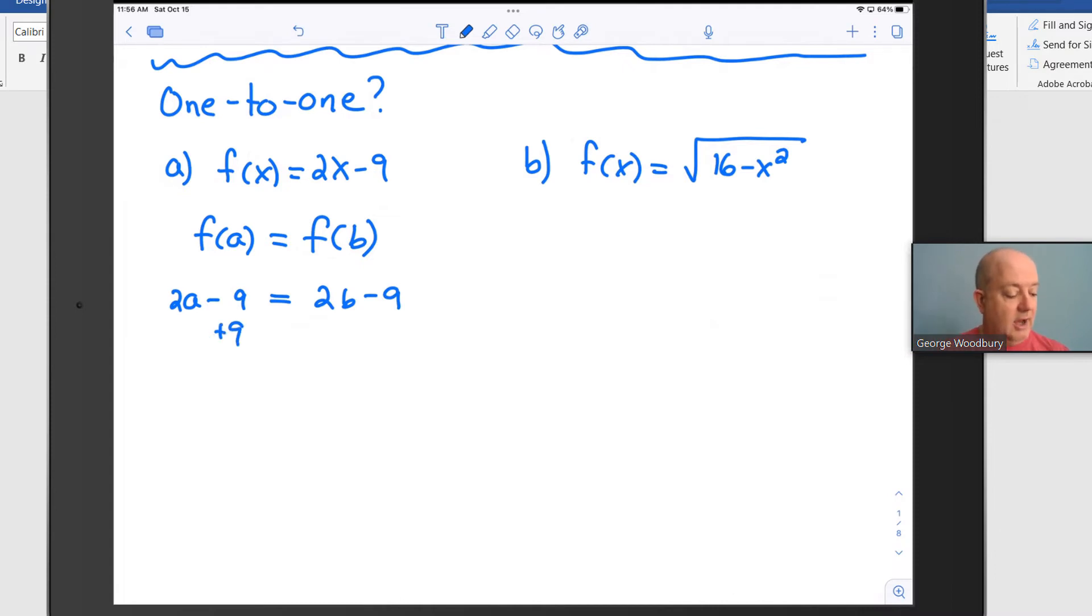We can start by adding 9 to both sides of the equation. That gets us to 2a = 2b, and when we divide both sides by 2, we see that a = b. So if we start with f(a) = f(b), then we know that a has to be equal to b, and that is one-to-one.